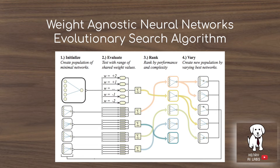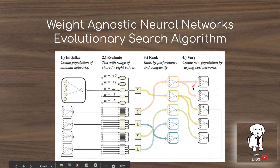This is the high-level idea of weight agnostic neural networks and the evolutionary search algorithm used to find networks that can perform reinforcement learning tasks without training the weights. First, they initialize a population of minimal networks — the simplest design possible. Then they evaluate each network with a range of weight values: plus 2, plus 1, plus 0.5, minus 0.5, minus 1, and minus 2. Then they rank the neural networks based on their mean performance across the weights, their maximum performance, and the complexity of the network, selecting the best in a standard evolutionary algorithm manner.